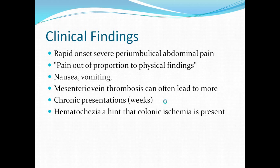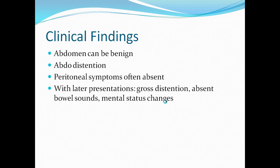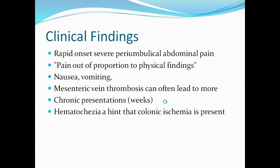Clinical findings: generally, you will notice a rapid onset severe periumbilical abdominal pain. You'll have the traditional pain out of proportion to physical findings. Generally you'll have a patient in excruciating pain but a very benign abdomen. There can also be nausea and vomiting. Mesenteric vein thrombosis can lead to more chronic presentations. Hematochezia is a hint that colonic ischemia is present.